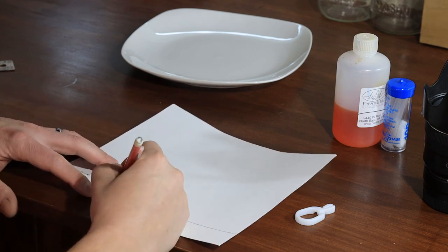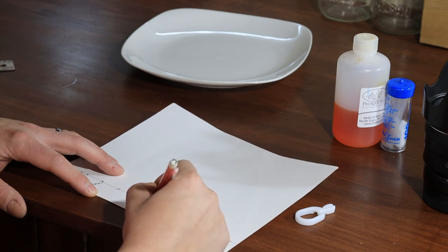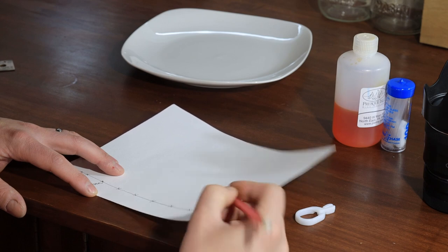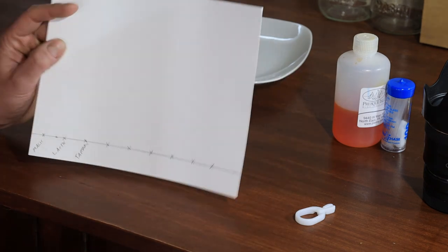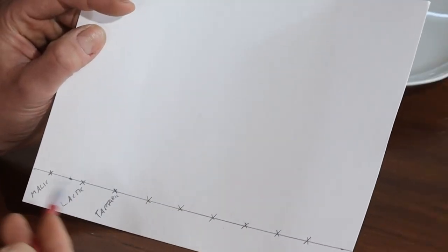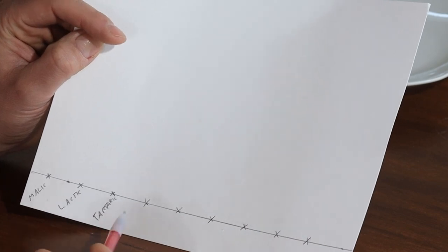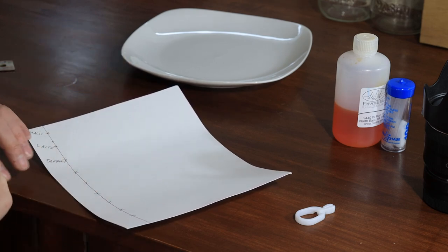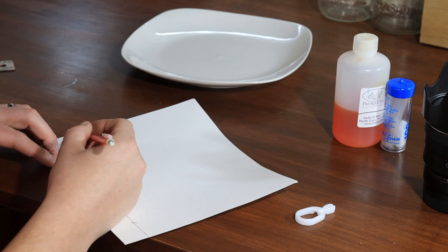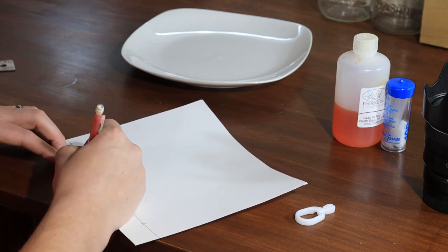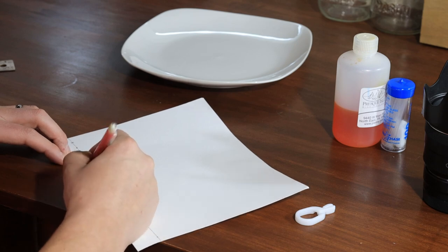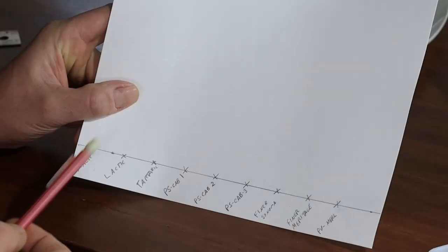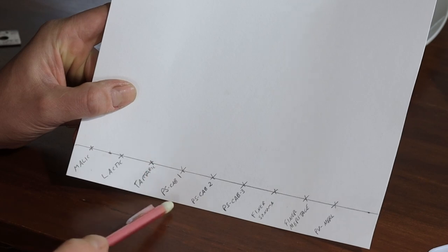And then I'll make some more X's for each of the wines that I'd like to test. So in this case, I'm going to make six X's. Maybe the biggest beauty of this whole test is that it's a little bit tedious to run it, but you're testing all these wines at the same time, which kind of offsets the annoyance of this test. So I have my standards, malic, lactic, tartaric, and then my six wines. Three Petite Syrah cab blends, the finer wine kits, and the Petite Verdot Merlot blend.